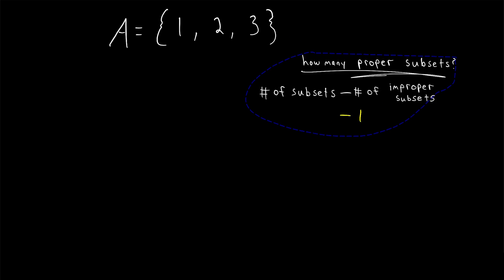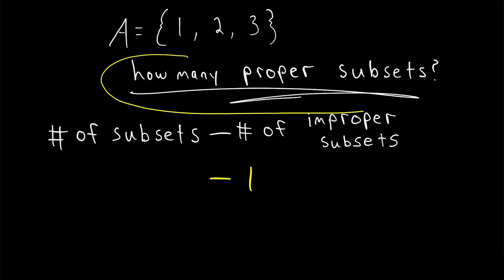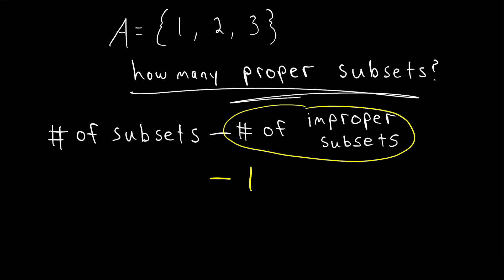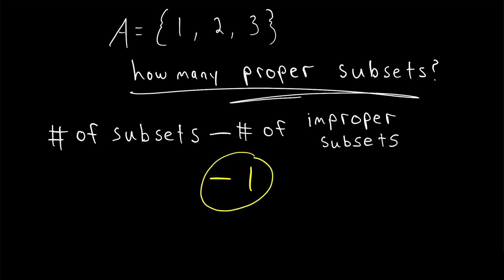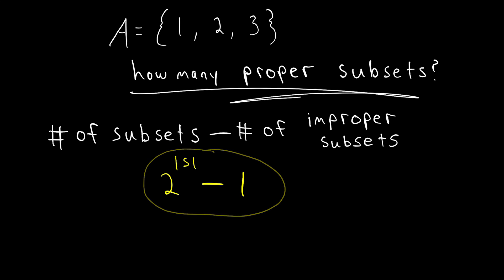Now we can go back and answer our original question. To find the number of proper subsets that a set has, we just need to subtract the number of non-proper subsets from the total number of subsets. The total number of improper subsets that any set has is one, and the total number of subsets that any set has is two to the power of the set's cardinality — let's say cardinality of S for a generic set S. So our final answer, the total number of proper subsets that a finite set has, is two to the power of its cardinality minus one. We just count up all the subsets and subtract the one improper subset, which is the set itself.